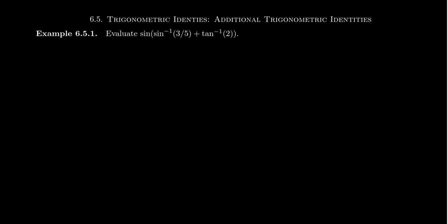We want to compute sine of sine inverse of three-fifths plus tangent inverse of two. So there are two separate inverse trigonometric functions inside of it. How do you handle that? Well, when it comes to inverse trigonometric functions, I want you to think of each as an angle. Because, after all, sine inverse of three-fifths is the angle which, if sine were evaluated at that angle, you get three-fifths. And tangent inverse of two is the angle which, if evaluated at tangent, would give you two. So whenever you see inverse trigonometric functions, think of them as angles.